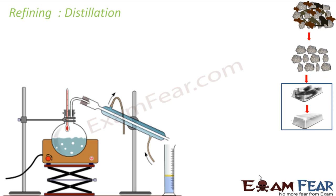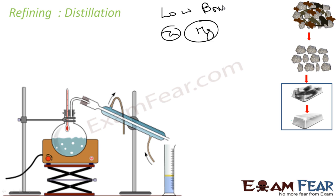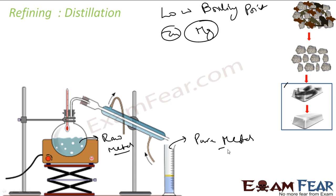Let's start with distillation — a very easy process. Distillation is useful for low boiling point metals like zinc and mercury. Since they have a low boiling point, we boil the impure raw metal, collect the vapors, cool them down, and what you get is the pure metal. Just like distillation of water, we can apply the same to metals. For metals with a high boiling point, this process cannot be used.